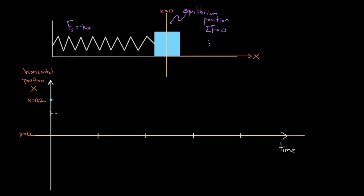So remember, this is the amplitude — this distance here is the amplitude. And then what does the mass do? Well, it shoots back toward equilibrium. That's X equals zero. And then it oscillates. It goes through that point and comes back. So on the graph it looks like this: going toward equilibrium, hitting equilibrium — that's when it's at X equals zero.